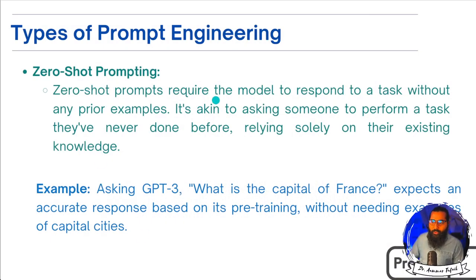Zero-Shot Prompting means you write one prompt — for example, 'What is the capital of France?' — and the model will look at the data it was trained on and give you the answer right away. The accuracy depends on which data it was trained on. You don't give any prior examples; you ask one question and get the answer. That is called Zero-Shot Prompting.